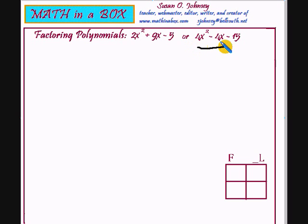If you've not watched or listened to the first lesson, you really should go back and do that. In this lesson, we are going to factor the trinomial 4x² - 4x - 15. This is a trinomial. It has three terms.